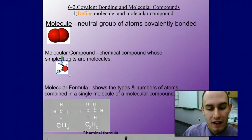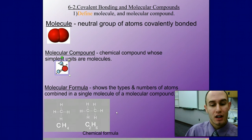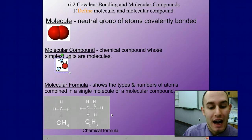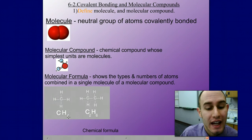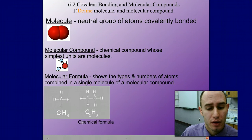A molecular formula shows the types and numbers of atoms combined in a single molecule of a molecular compound. Our example right here is CH4, this is methane and we are going to learn how to draw these Lewis structures. This is also a chemical formula.